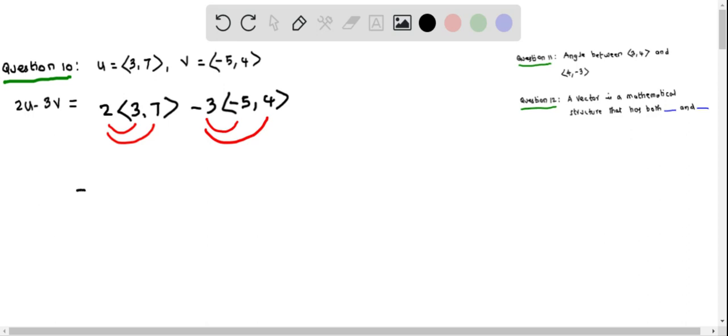When we do that, we get 2 times 3 is 6 and 2 times 7 is 14. This is a vector, and here I multiply by -3, so I'm going to put plus here.